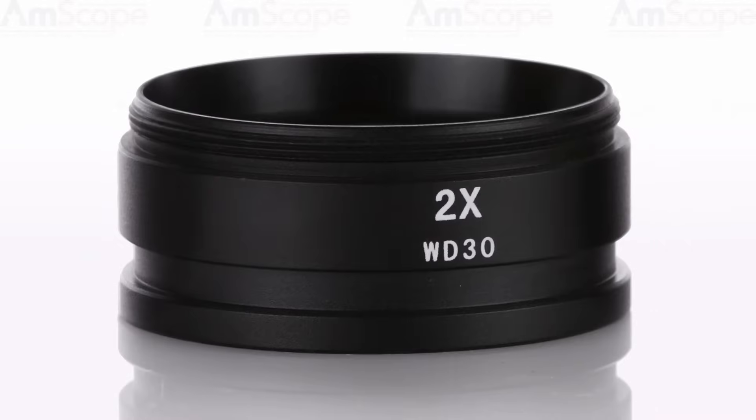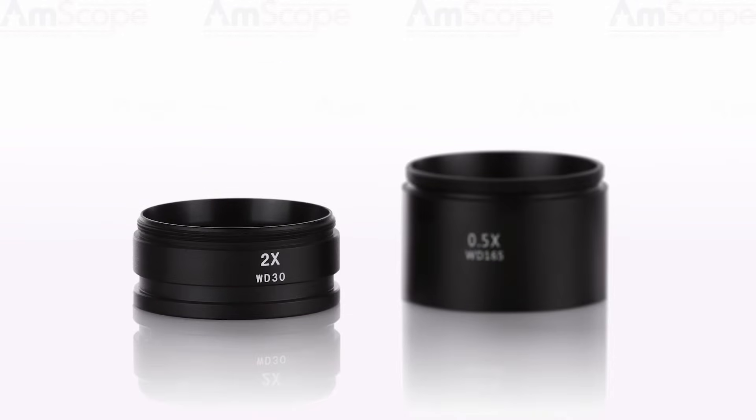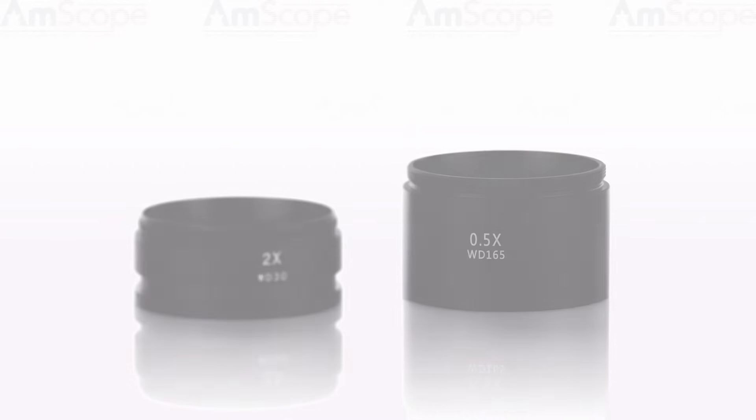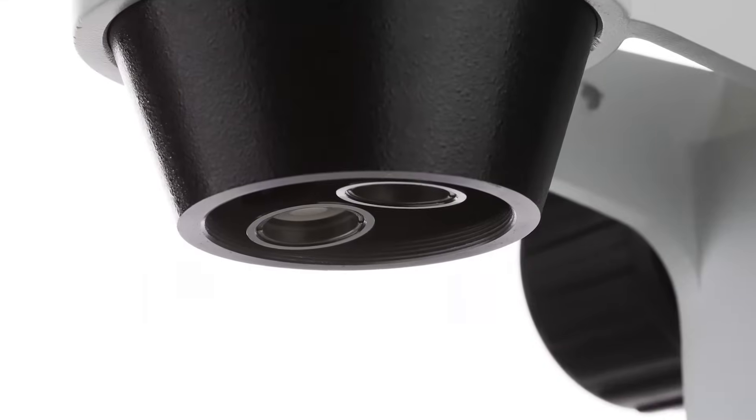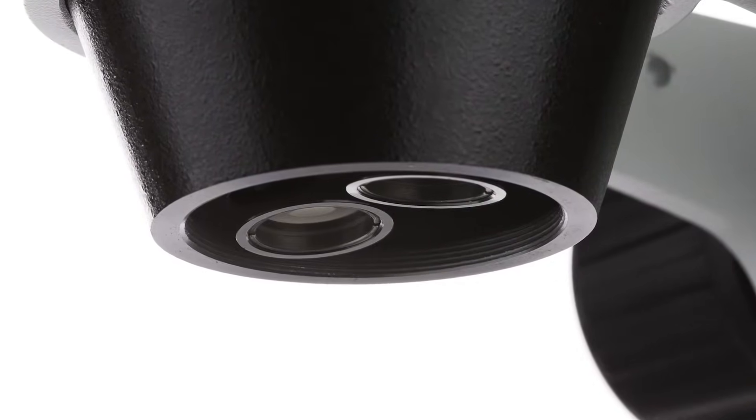The SM2 series head accepts a range of accessories. Among the most popular are Barlow lenses. These are auxiliary lenses that either increase or decrease the magnification by a set factor. Simple to install, they attach to the head's threaded lens port.